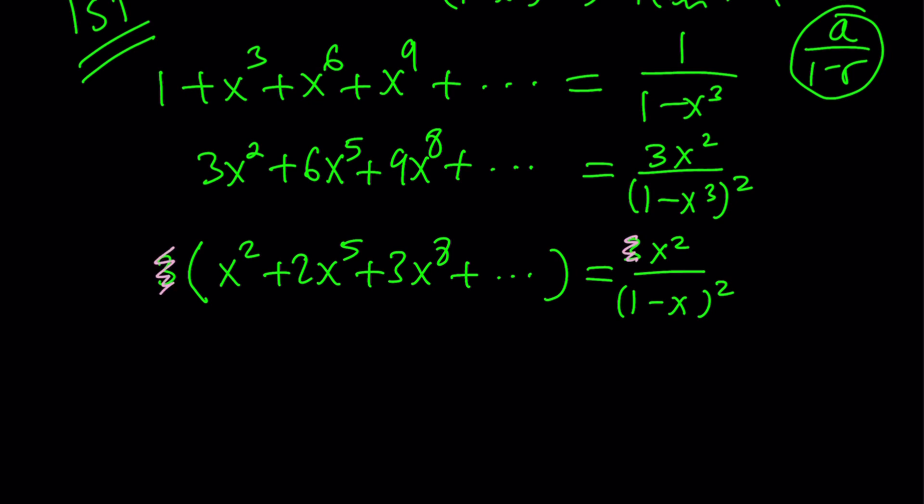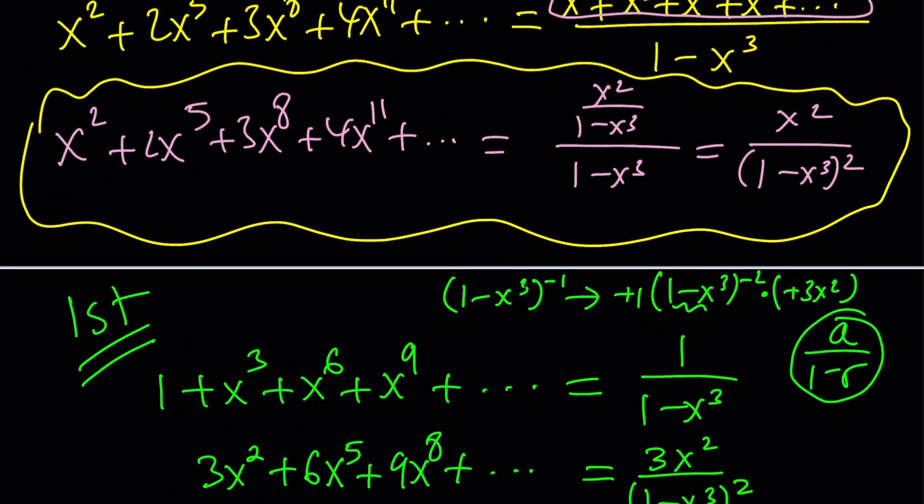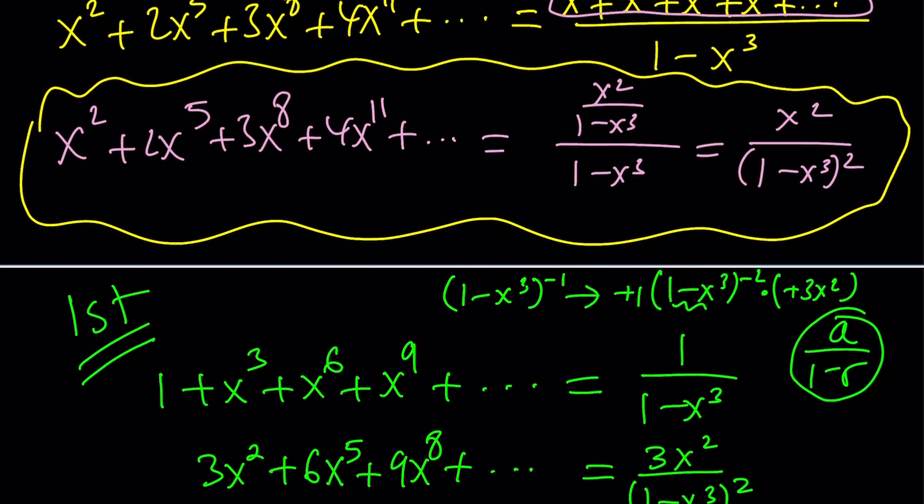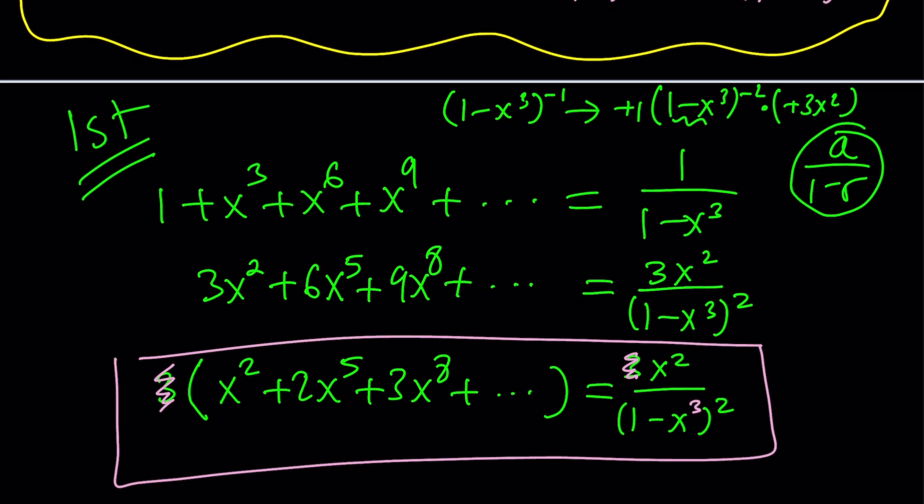So the answer is x squared. Oops. I was supposed to write an x cubed here. Yes. This is the sum I was looking for and that's the answer. If you compare it to the first one, I mean the second method, to the second one, you get the same idea because it's the same series.